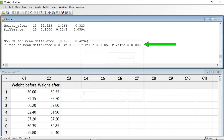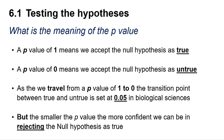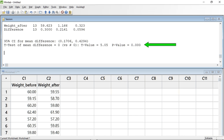Minitab has shown us that the p-value is below 0.000. So, what is the meaning of the p-value? A p-value of 1 means we can accept the null hypothesis as true, whereas a p-value of 0 means we can accept the null hypothesis as untrue. As we travel from a p-value of 1 to 0, the transition point between true and untrue is set at 0.05 in the biological sciences. The smaller the p-value below 0.05, the more confident we can be in rejecting the null hypothesis. So a value below 0.000 is below our transition value of 0.05, meaning there is a significant difference between the samples and we can reject our null hypothesis and accept our alternative hypothesis — that there is a difference between the mean weights of individuals before and after a fencing competition.